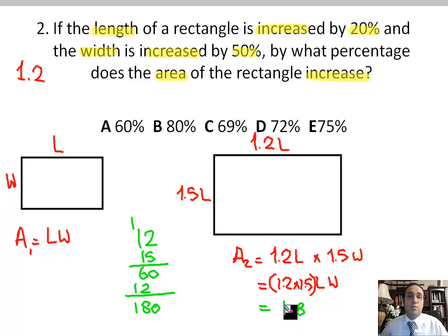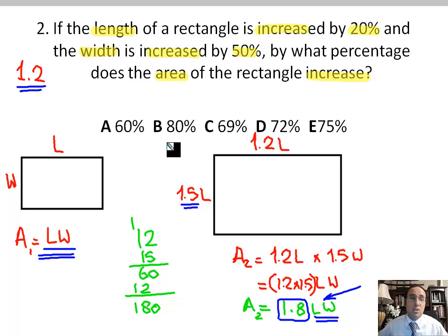So 1.8 times LW. That's your new area, area two. Now, what is the percentage increase in the area? The old area is LW. The new area is 1.8 times LW. And remember, 1.8 means an increase by 80%. Just like 1.2 meant an increase by 20%, and 1.5 meant an increase by 50%. 1.8 right here means an increase by 80%. So the answer is B, 80%.